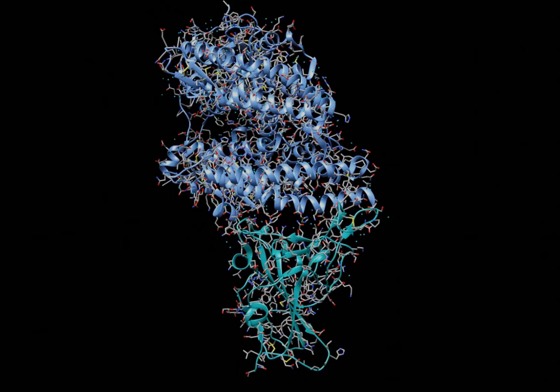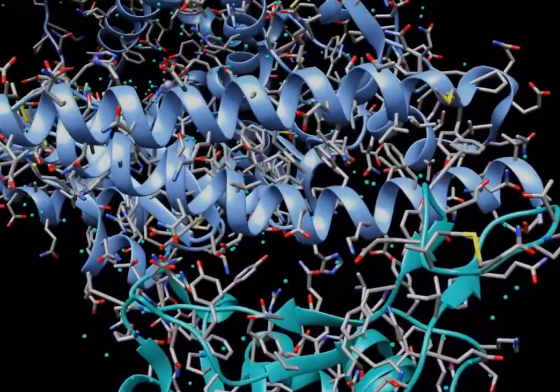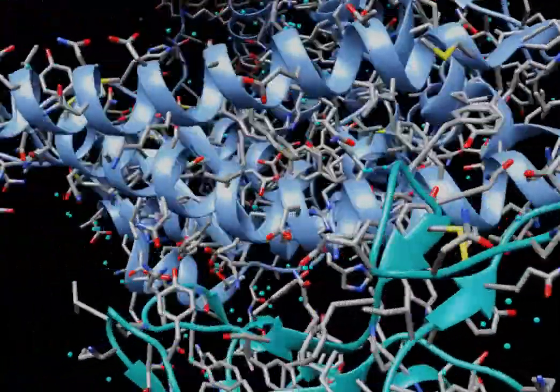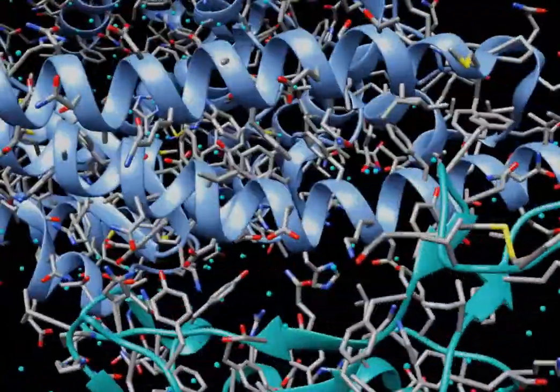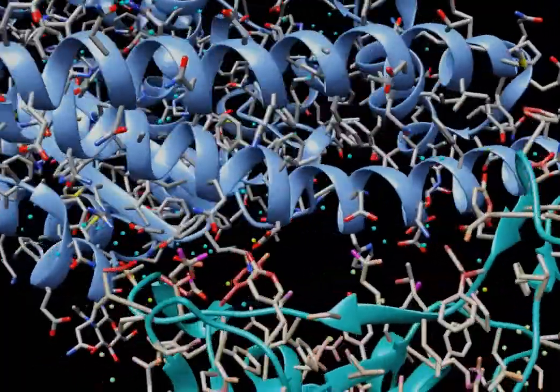This is now another representation named ribbon representation of the molecular complex. The receptor ACE2 is on the top and the receptor-binding domain is just below. This representation allows us to visualize inter-atomic interactions.